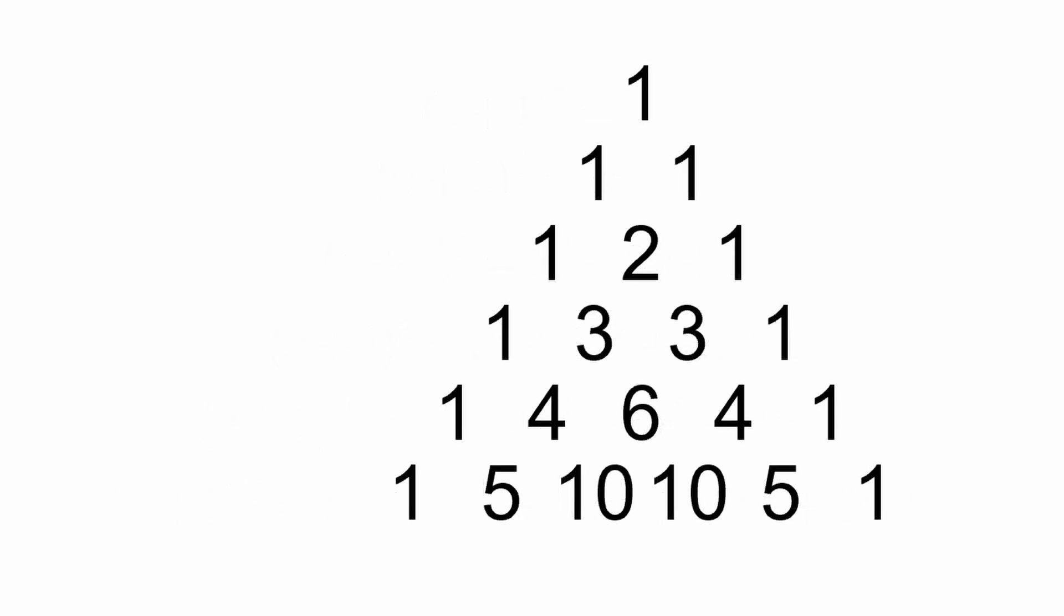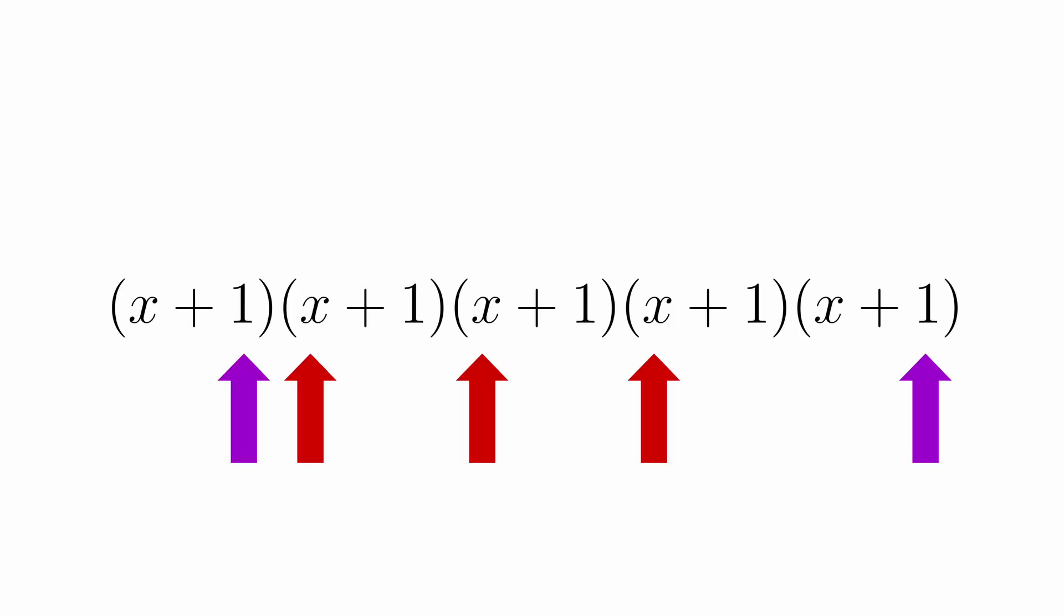Honestly, it doesn't have that interesting of a proof. Simply, if you're looking for the coefficient of x to the k, you need to pick k x's and n minus k 1's as each term in the expansion either has 1 or x from each of the n copies of x plus 1.